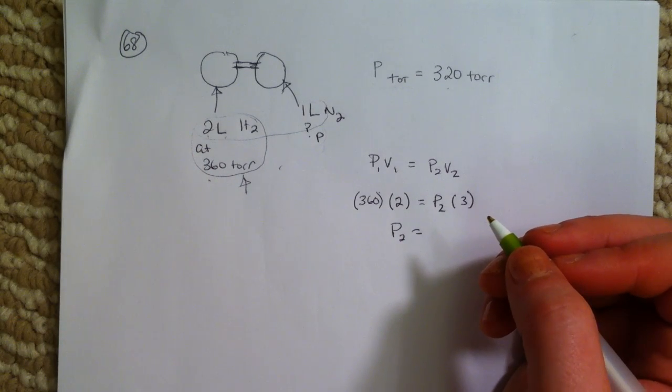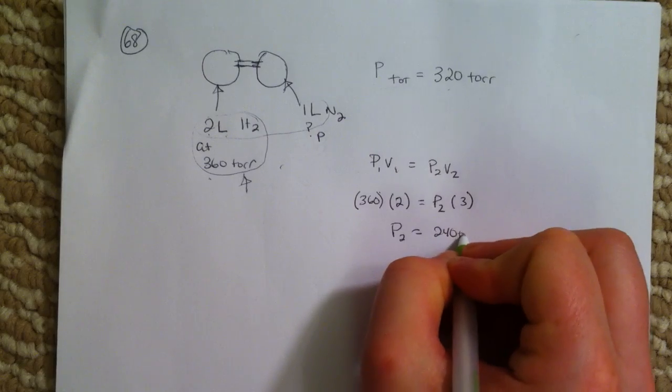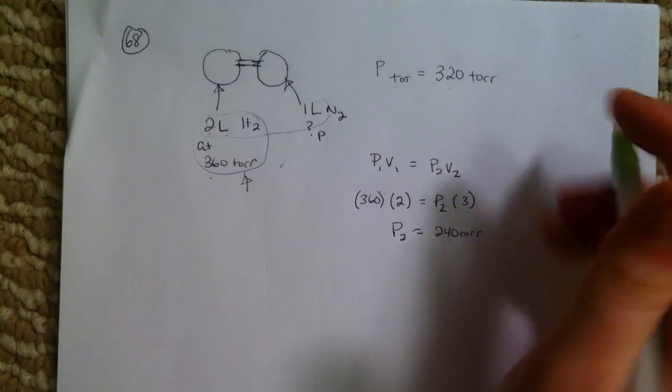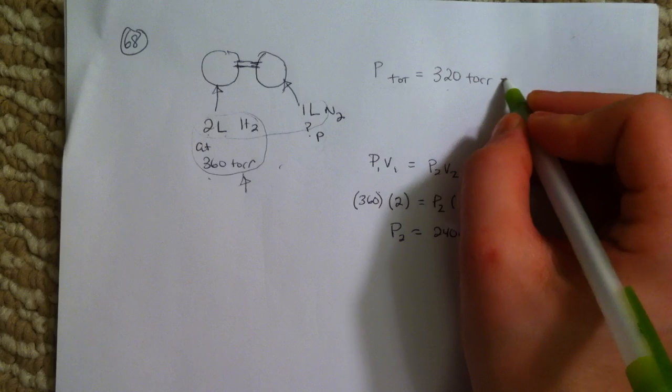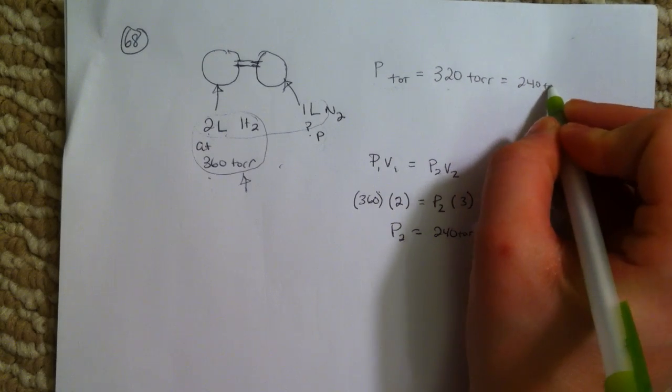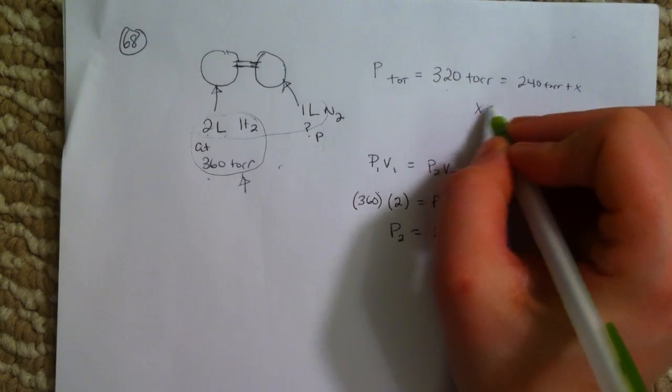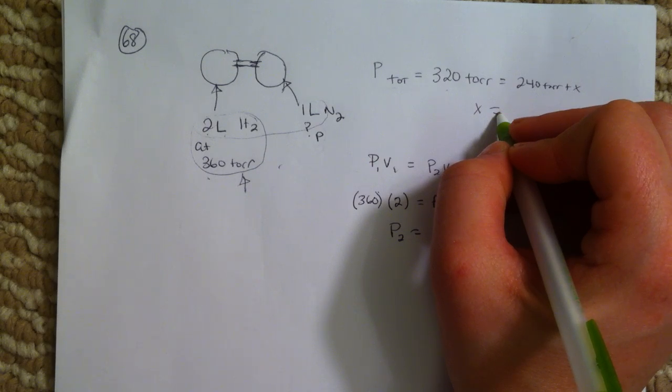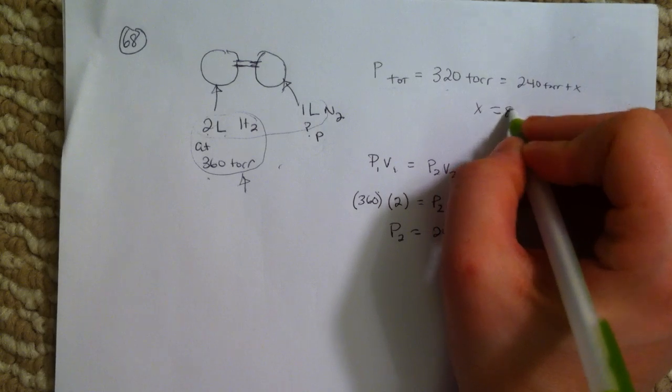is going to be equal to 240 torr, and 320 torr is equal to 240 torr plus X. So X is equal to 80 torr.